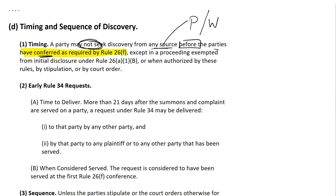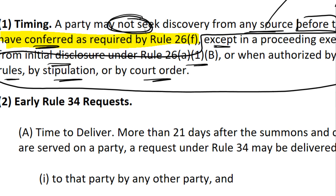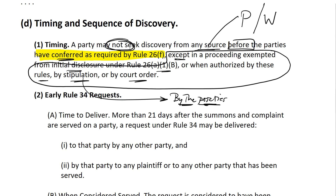There are of course exceptions to that, just like there are under many of the rules. Except in proceedings exempted from initial disclosure under Rule 26A1B, or when authorized by the rules, by stipulation, or by court order. A court order is the court saying what can and can't be done, and stipulation is by the parties. So unsurprisingly, the parties can opt out of the main rule and self-order the timing.